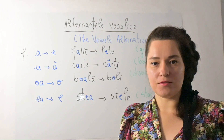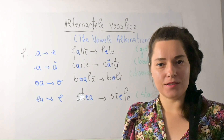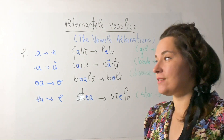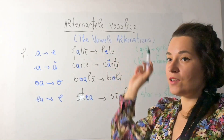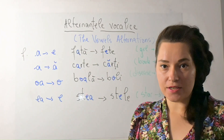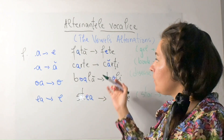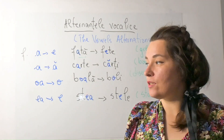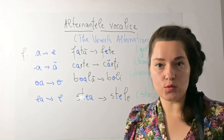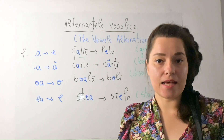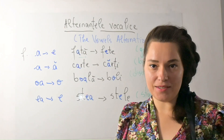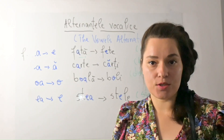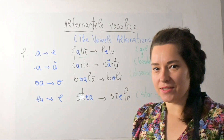Today we are going to talk about the vowel alternations — alternațele vocalice. When we pass a noun from singular into plural, something is happening in the middle of the noun; some letters are changing. Let's see some examples.